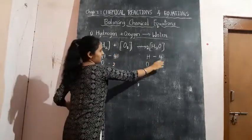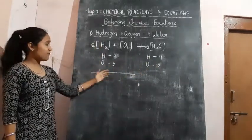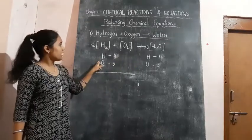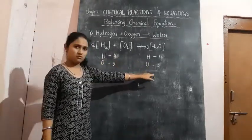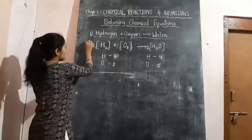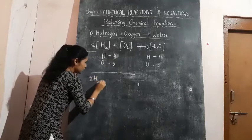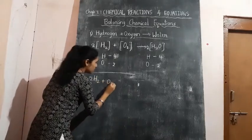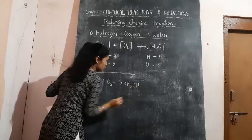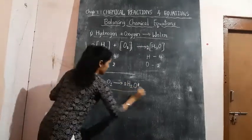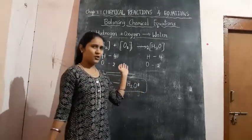Now compare the number of atoms of each element on both sides: hydrogen is 4 on the reactant side and 4 on the product side; oxygen is 2 on the reactant side and 2 on the product side. So now we have our balanced equation: 2H₂ + O₂ → 2H₂O. This is our balanced equation. Isn't it easy?